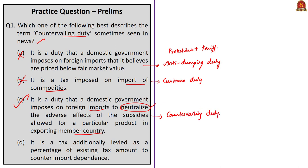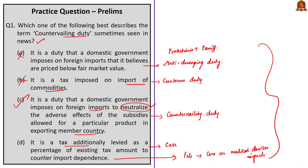Option D speaks about CES — a tax additionally levied as a percentage of the existing tax amount. The phrase 'to counter import dependence' is given to confuse you. CES can also be used to counter import dependence; for example, there were plans to impose CES on medical device imports in February 2020. Through this question, we have seen four different types of taxes: anti-dumping duty, customs duty, countervailing duty, and CES. In UPSC prelims, if you know the underlying concept behind the terminology, you can easily attempt such questions.